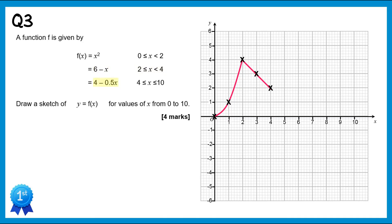The final section is 4 minus 0.5x for x values from 4 to 10. Starting at x=5: 4 minus 2.5 gives 1.5; x=6 gives 1; x=7 gives 0.5; x=8 gives 0; x=9 gives -0.5; and x=10 gives -1. We join these up and there's our completed function.